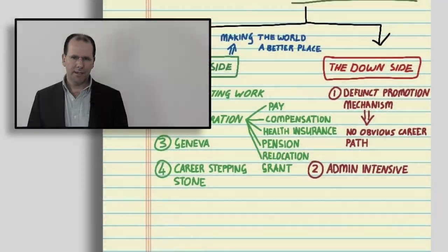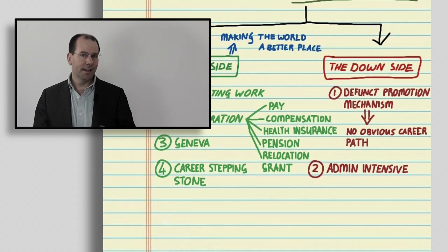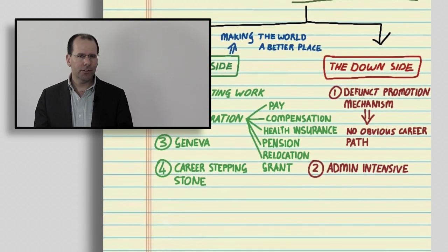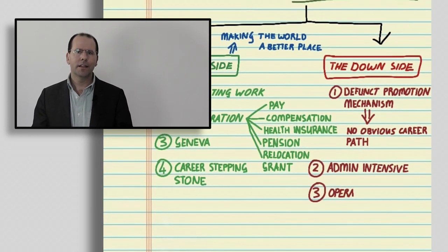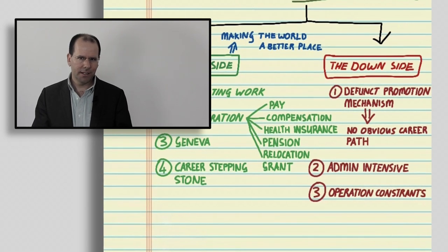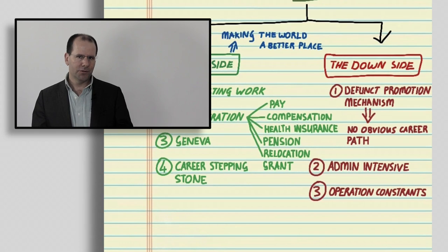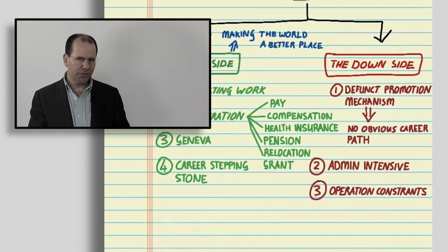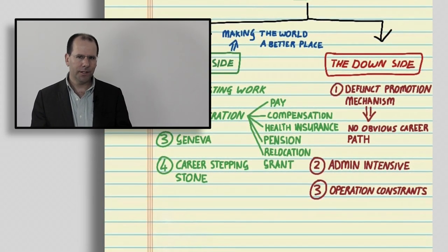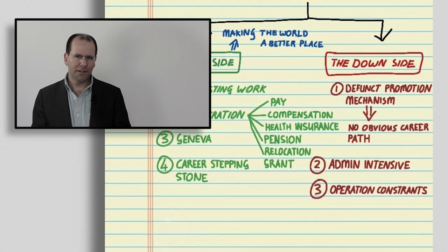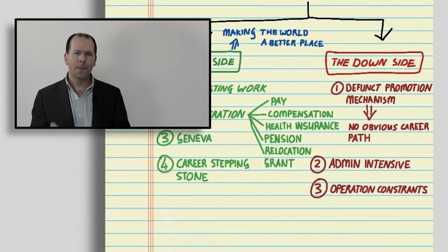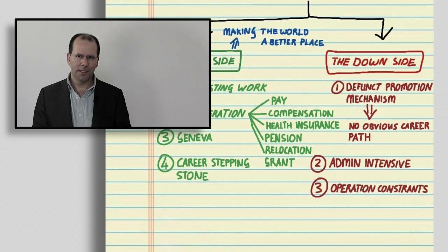If you're working at the WHO, what it is that you can and can't do, or what it is that the WHO can and can't do, is certainly constrained by the fact that the WHO is representing the interests of its member states. I'm not going to talk in this video about the strengths and weaknesses of the WHO as an institution—I think we'll cover that in a future video—but it's probably worth mentioning that that can be a point of frustration for people working within the organization itself.